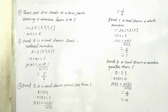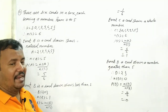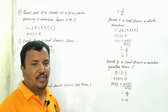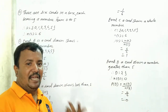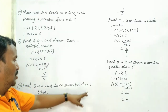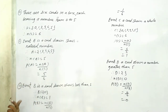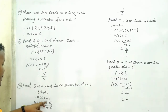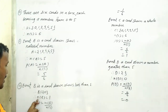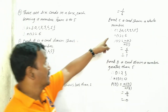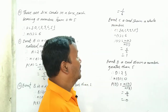Event B: a card drawn shows less than 1. Less than 1 means only 0 is there. So B is equal to {0}, just one element. Number of B is equal to 1. Probability of B is equal to number of B upon number of S, that is 1 upon 6.